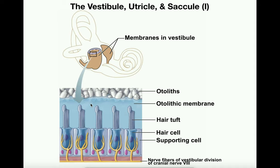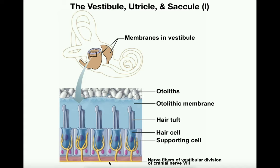The otolithic membrane is basically a gelatinous material, and on top of it we have otoliths — like tiny pebbles, and there are a lot of them with a decent amount of collective weight. If you change equilibrium — raising your head upward or downward, or going through linear acceleration — these otoliths can move back and forth, either to the right or to the left. When the otoliths move, they pull the otolithic membrane in the same direction, which in turn moves the cilia or hair tufts in that direction. Depending on which direction the hair tufts move, different signals are sent through the axons to the vestibular nerve.